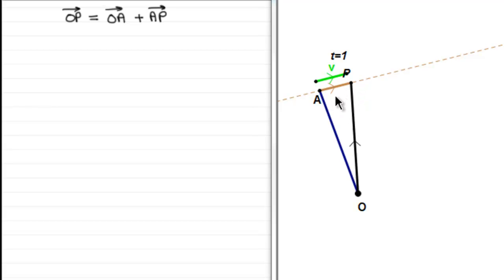And so AP equals 1V when t equals 1, or just simply V. And after two units of time, P is here, and you can see that AP equals 2V. And when t equals 3, AP will be equal to 3V. And when t equals 4, AP is going to be equal 4V and so on.